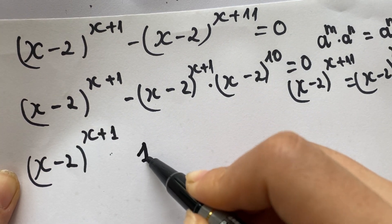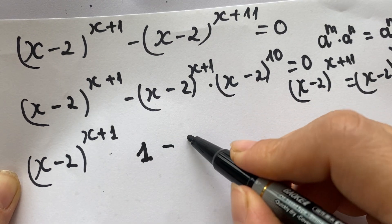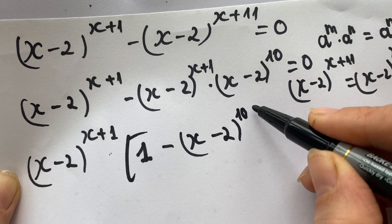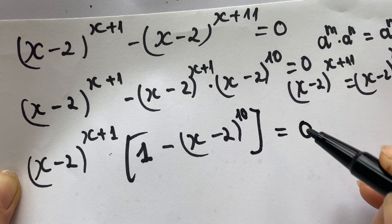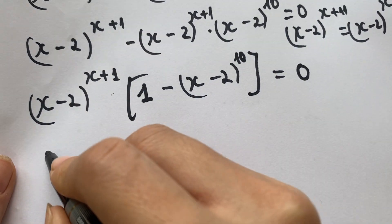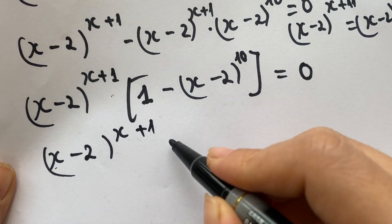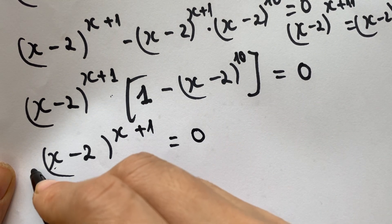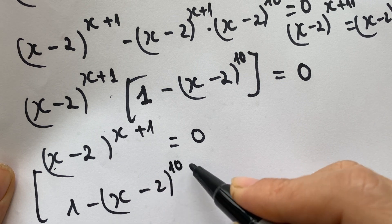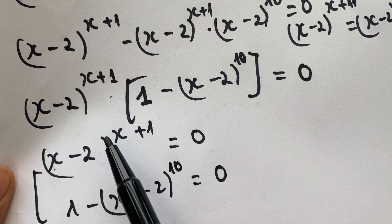In the first term we have 1, and then minus (x minus 2) to the power 10, all multiplied by (x minus 2) to the power (x plus 1), equals 0. This means either the first term equals 0 or the second term equals 0.